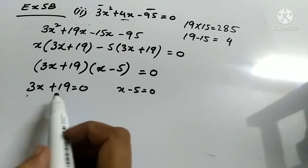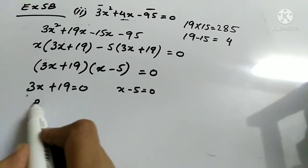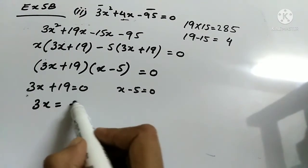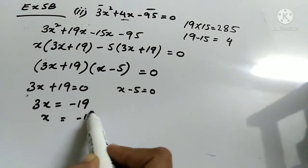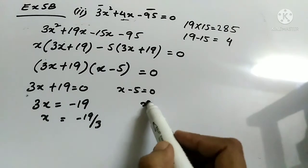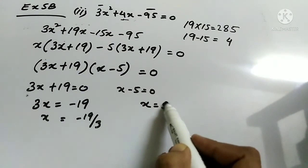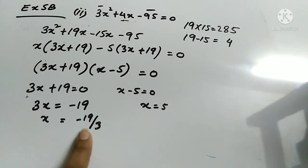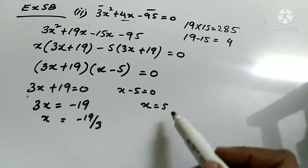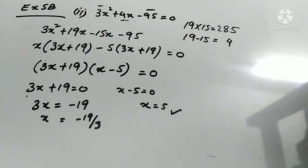Setting each factor to zero: 3x + 19 = 0 gives x = −19/3, and x − 5 = 0 gives x = 5. Since time cannot be negative, we reject x = −19/3 and take the positive value x = 5.